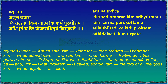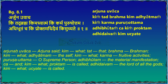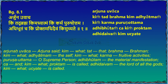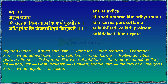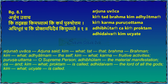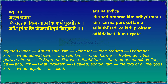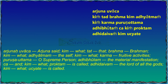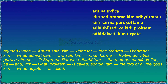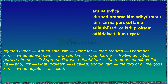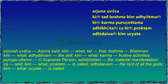Arjuna asks: Kim Tath Brahma - what is this Brahman you are talking about? Kim Adhyatma - what is this individual self inside the bodies? Kim Karma - what is karma? Adhibhutam, Purushottama - what is Adhibhutam, that which pertains to material manifestation? Adhidaivam Kim Ujjyate - what do they call Adhidaivam, the lord of all the gods? And Adhidaivam and Adhiyajnaya - what is Adhiyajnaya, the lord of the sacrifices?